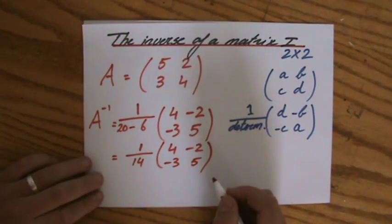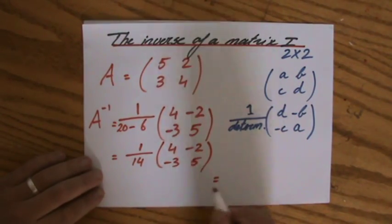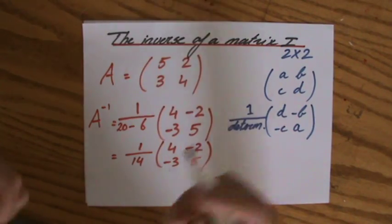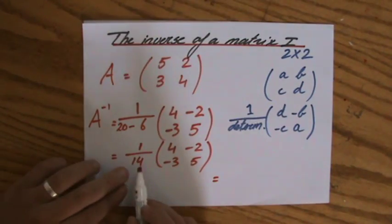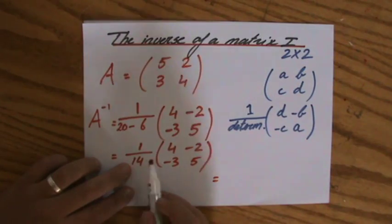Looks a little bit messy. I do apologize for that. The last thing you then do is multiply all those pieces of information in your 2x2 matrix by that scalar 1 over 14. So,